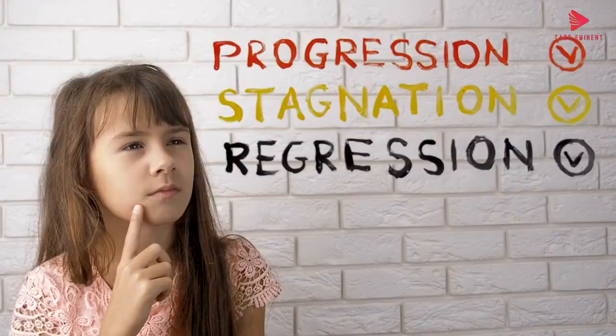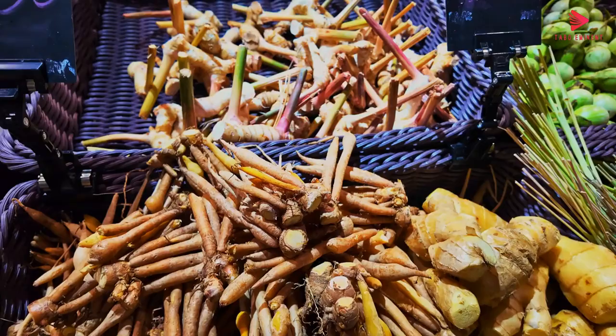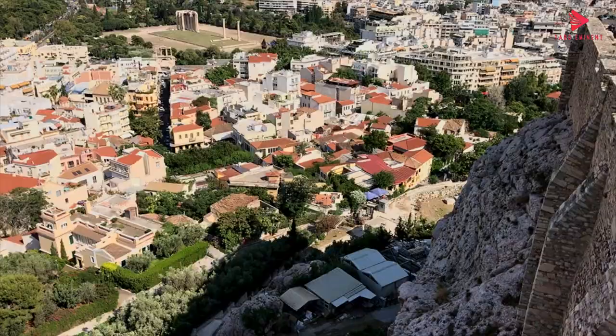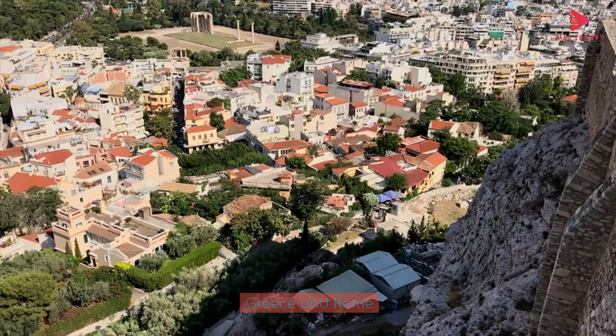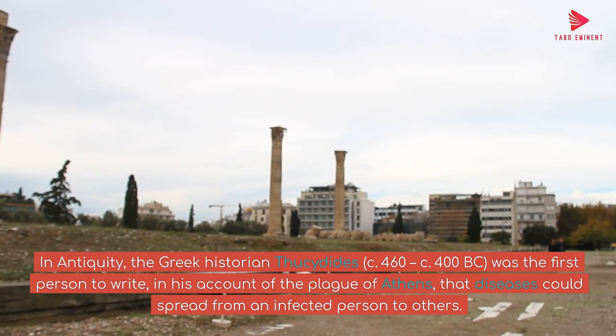Development: Ancient India. Ancient Indian rishis such as Kanva described tiny creatures called krimi and their harmful effects in the Atharvaveda. In Greece and Rome, the Greek historian Thucydides, circa 460–400 BC, was the first person to write, in his account of the Plague of Athens, that diseases could spread from an infected person to others.